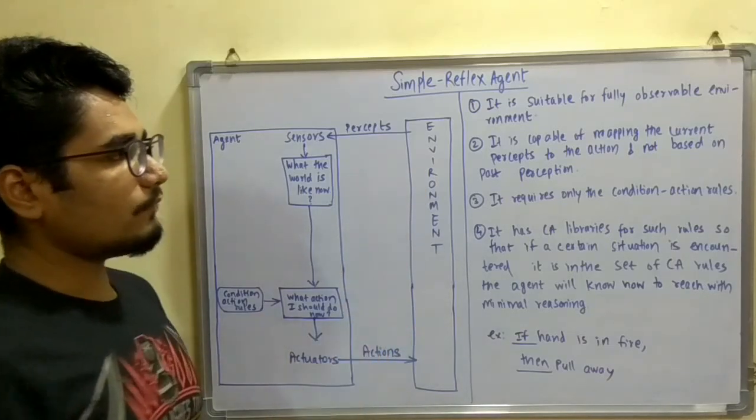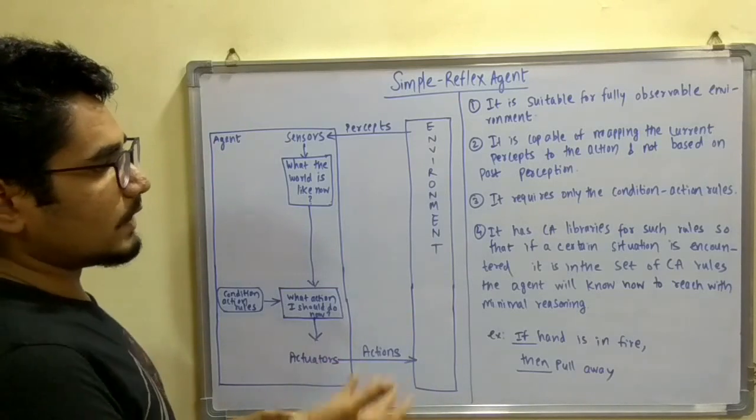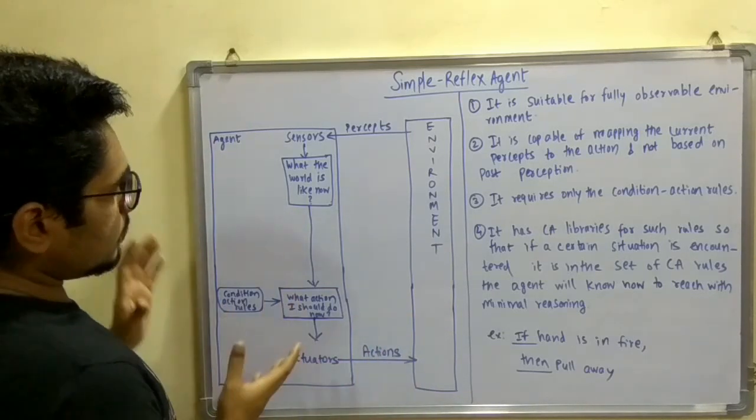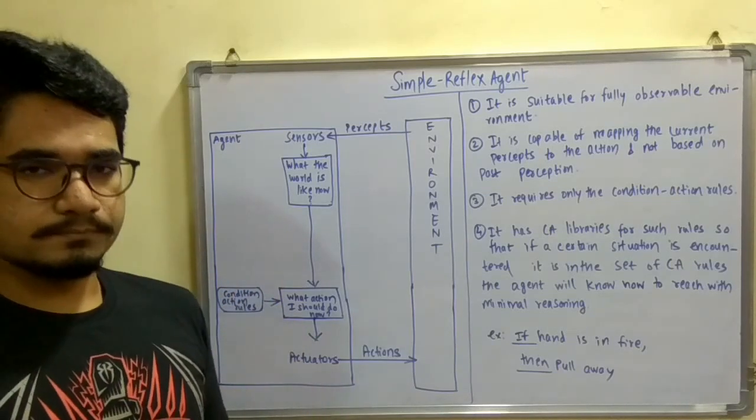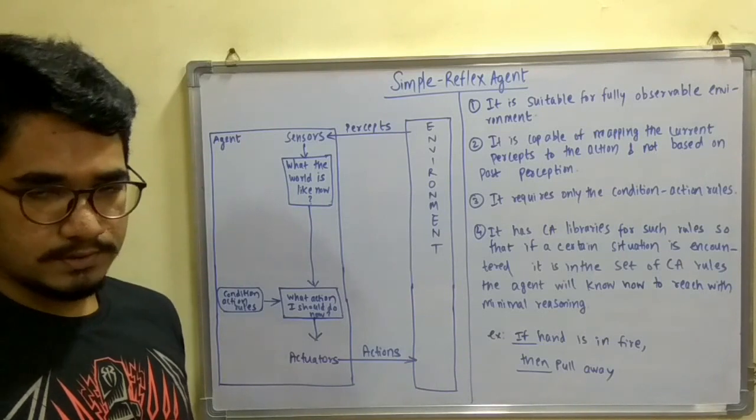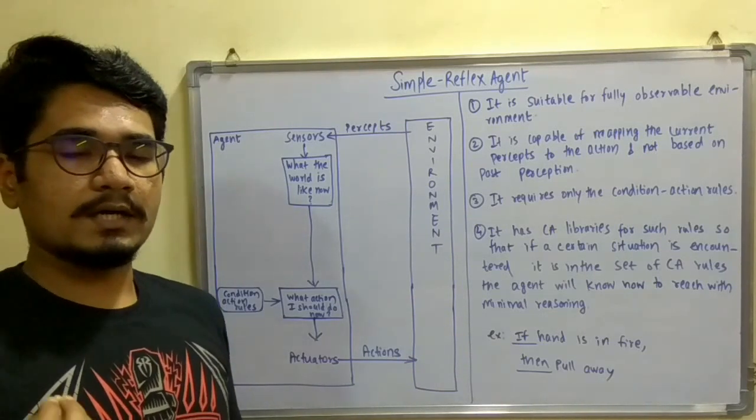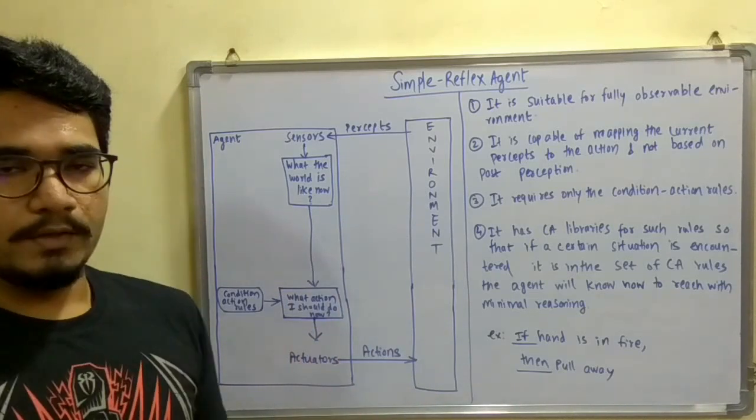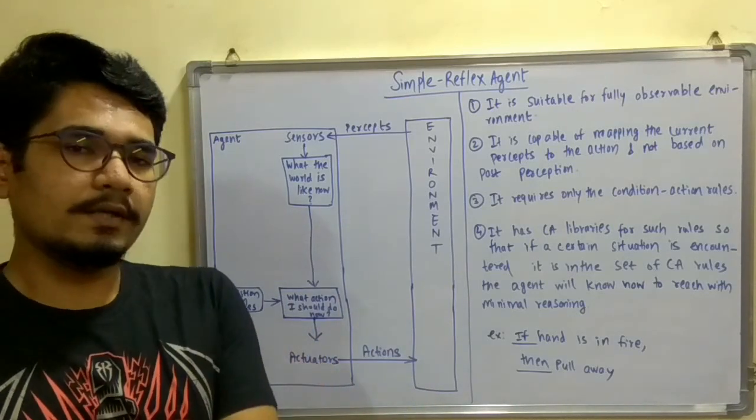It is capable of mapping the current percepts to the action, and not based on past perception. This agent will produce its kind of actions to accomplish those tasks, based upon the current inputs which are giving you right now. It will not store any knowledge base.